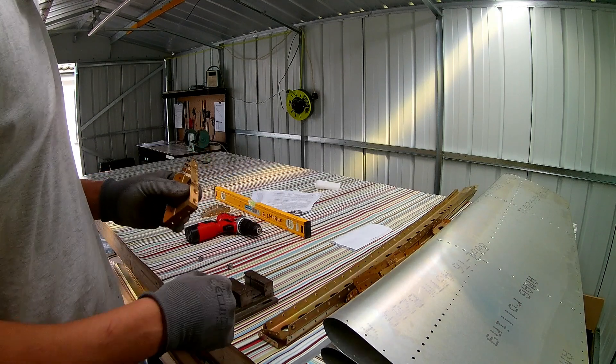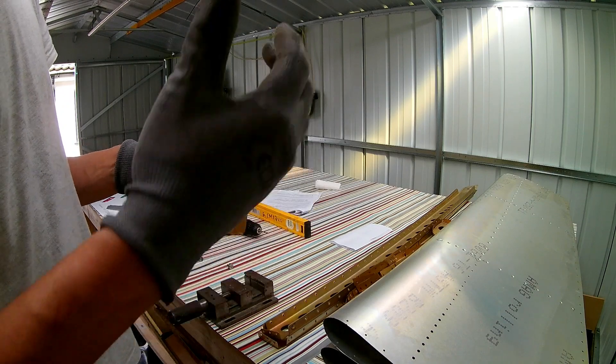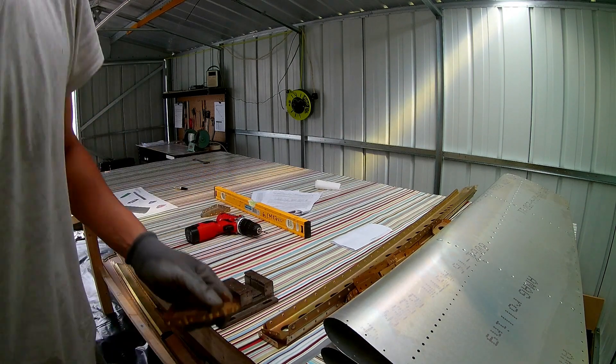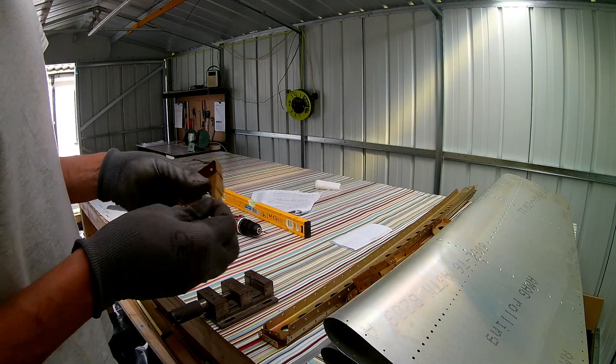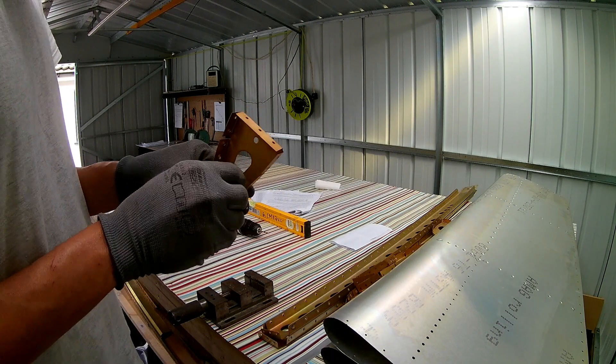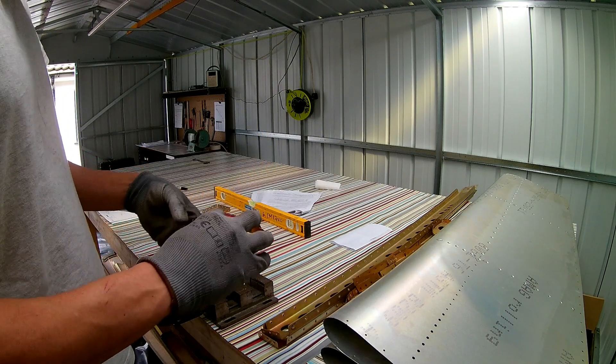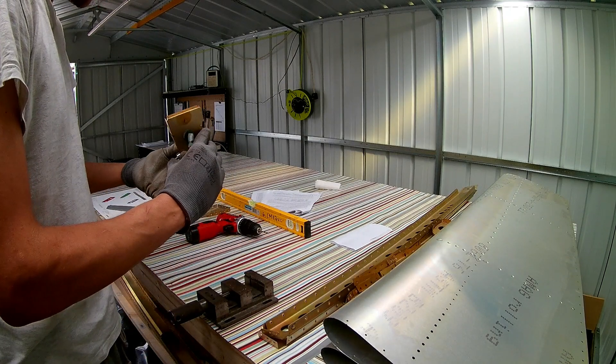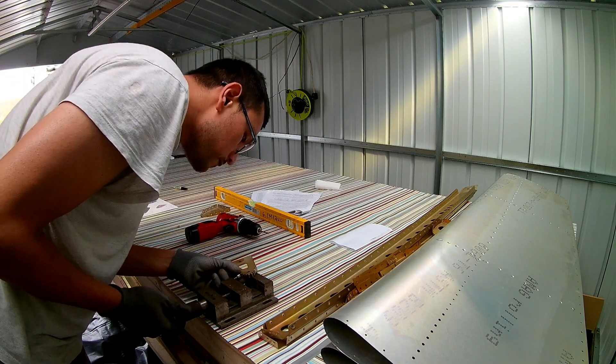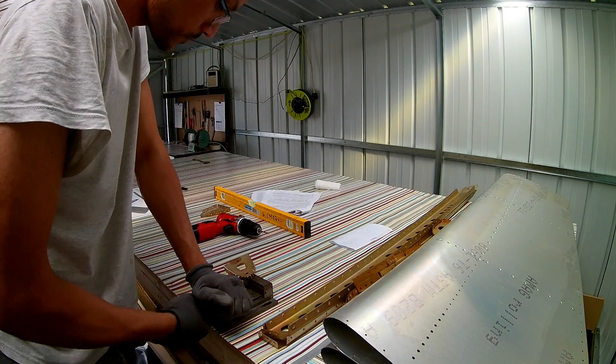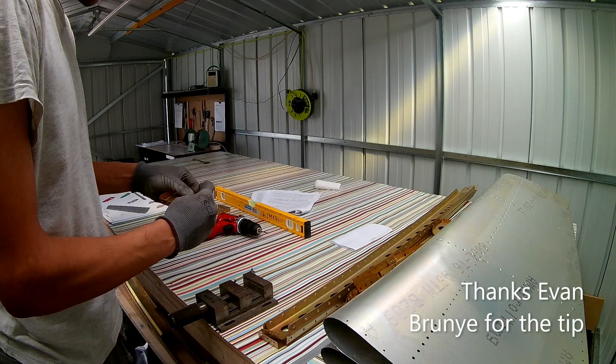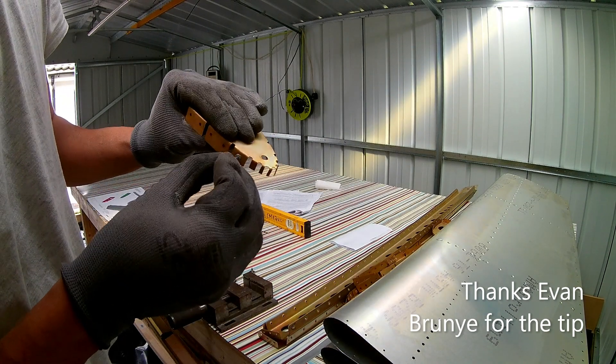Because the smaller parts you can't do on the DRDT2 dimpler or the big dimpler, I'm having to just use the dimple dies. Put them in, this is the one that's been ground up, and just squeeze them together using a small vise. You can see it's created the dimple and it's quite a nice one.